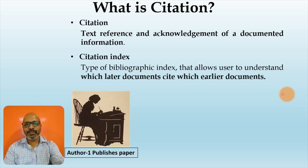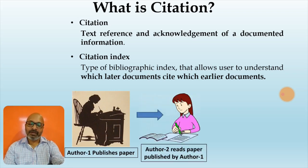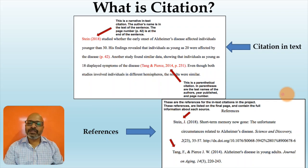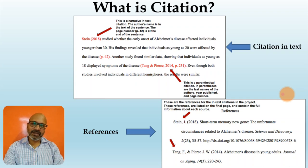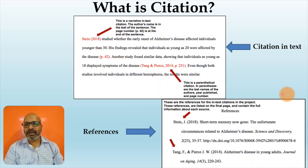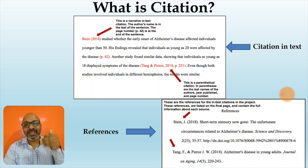Say an author, Author 1, publishes a paper and it has been referred by another author called Author 2. Author 2 publishes her own paper. When we look at Author 2's paper, we will see that she has cited various references in her text and she has included those references in her bibliographic list. Now there are various agencies which will keep track of all these citations and will provide you information for each and every paper that has been published.